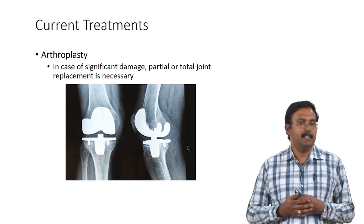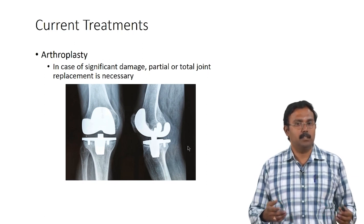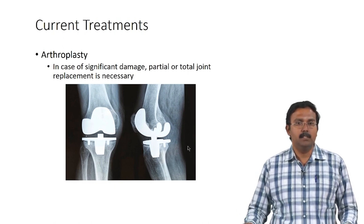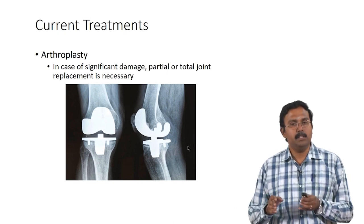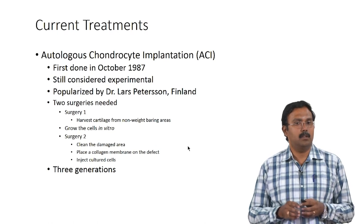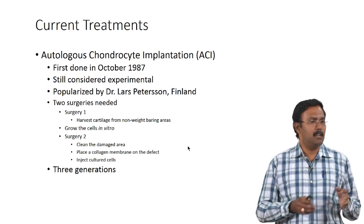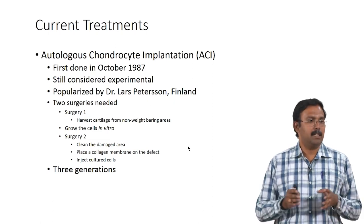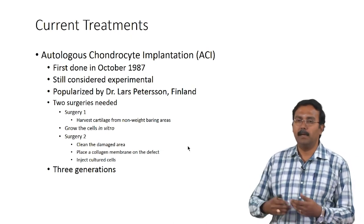Arthroplasty is basically replacing damaged tissue using partial or total joint replacement, depending on how bad the situation is. Those are the current treatments. Now looking at tissue engineering-based treatments: the autologous chondrocyte implant procedure was first done in 1987 — it has been a little more than 30 years, but it is still considered experimental by many people, and even after 30 years people are still exploring and trying to optimize it.